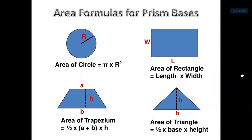For the cylinder, the base is a circle, so the area of the base is πr². For the rectangular prism, the area of the base is length times width. For the triangular prism, the area of the base is one-half bh. And for the trapezoid prism, the area of the base is one-half (a + b) multiplied by h, or one-half h multiplied by the sum of the two bases.